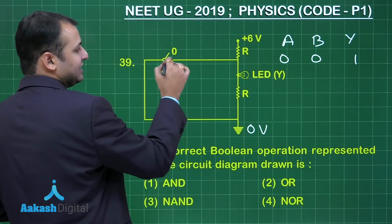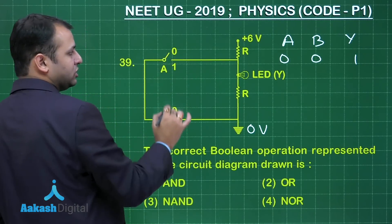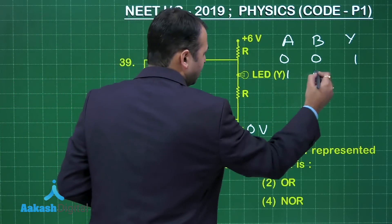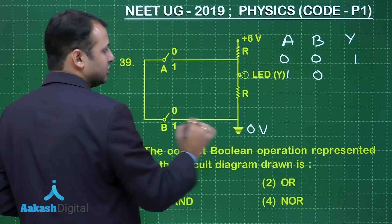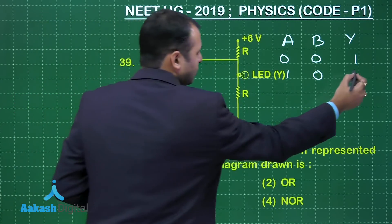Now the second case let's take this as 1 and this as open. So this is closed and this is open. So 1, 0. Again in that case the circuit is not connected. So potential difference will remain high and bulb will glow.